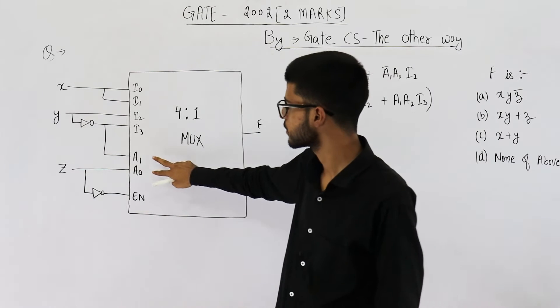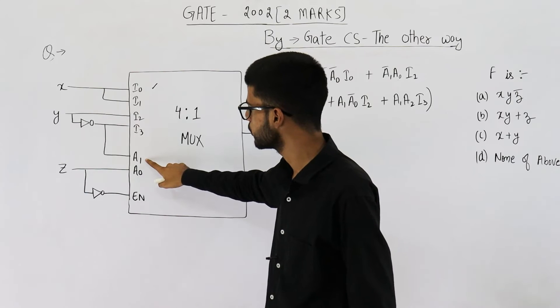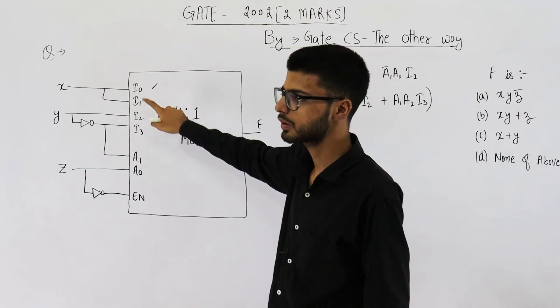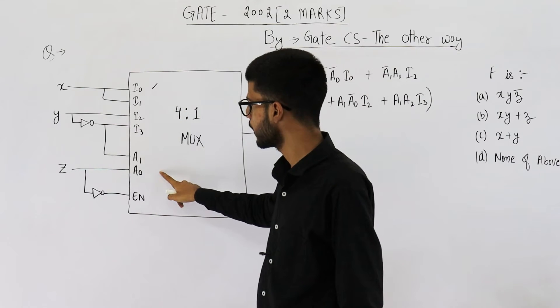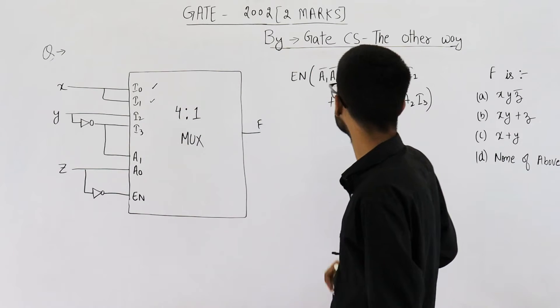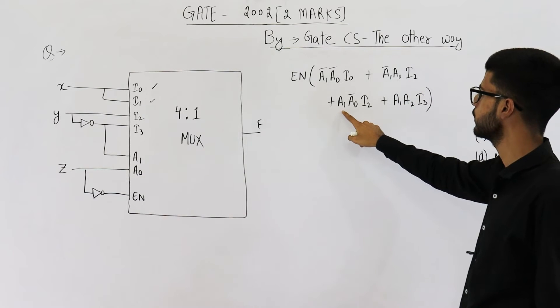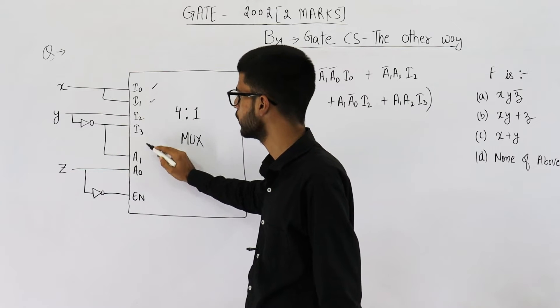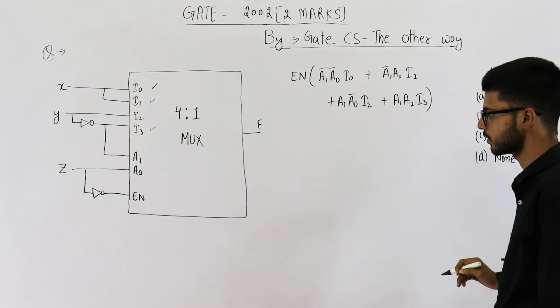See, when both the select lines are zero, zero, this input will be selected as output. Zero, zero means A1 bar, A0 bar and I0. So, it is A1 bar, A0 bar, I0. When their value is 0, 1, in that case, output is going to be I1. So, we have A1 bar, A0, I1. Similarly, 1, 0, I2. And on 1, 1, that means when both of these are 1, the output will be I3. Okay. So, that's how I have written this equation.